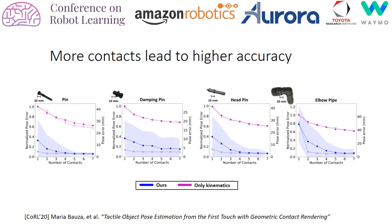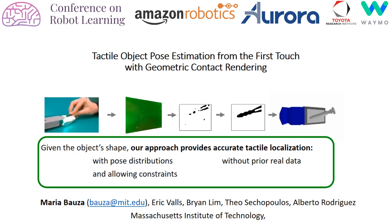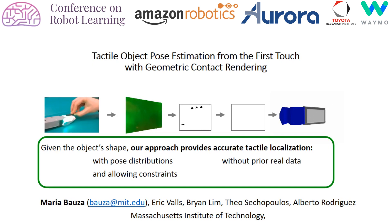In summary, we have presented an approach that, given the object model, can provide accurate tactile localization for a given object. We do that by providing pose distributions rather than single estimates, to account for poses that can result in very similar contact shapes. Moreover, we do not require any prior data, and our model can be combined with external constraints like multi-contact.